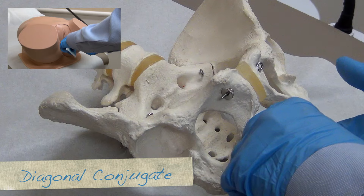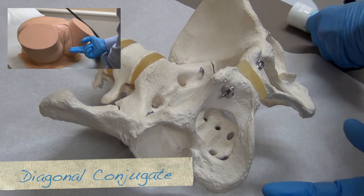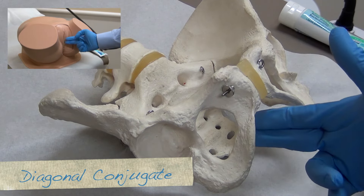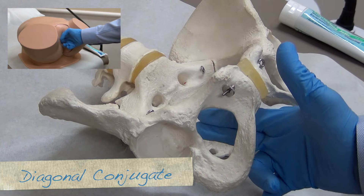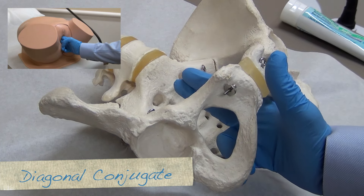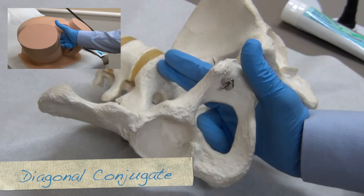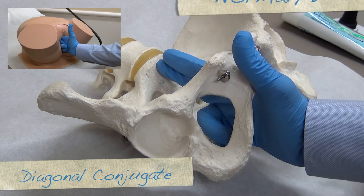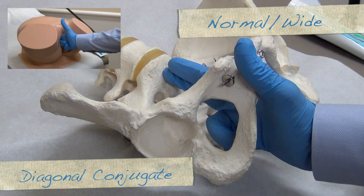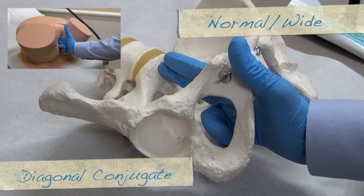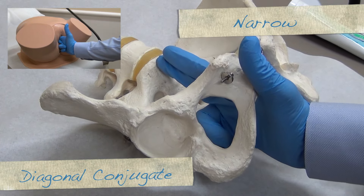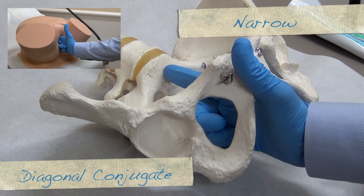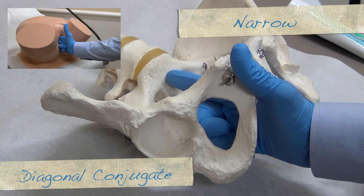Next, gel is applied to the index and middle fingers of the gloved hand, which is gently placed into the vagina. The wrist is dropped, and the examiner palpates anteriorly to attempt to feel the sacral promontory with the middle finger. This allows assessment of the pelvic inlet and the anterior-posterior diameter of the pelvis. For a normal or wide AP diameter, the sacral promontory will not be reached. For a narrow AP diameter, the sacral promontory will be reached with the middle or even the index finger.